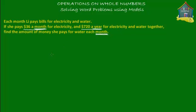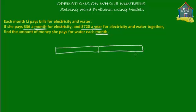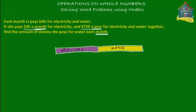Let's first draw a model diagram which represents the amount of money that she pays in bills for electricity and water each month. This block represents the amount she pays for electricity, and this block represents the amount she pays for water each month. Let's color code them — purple for electricity and yellow for water. This is electricity and this is water.